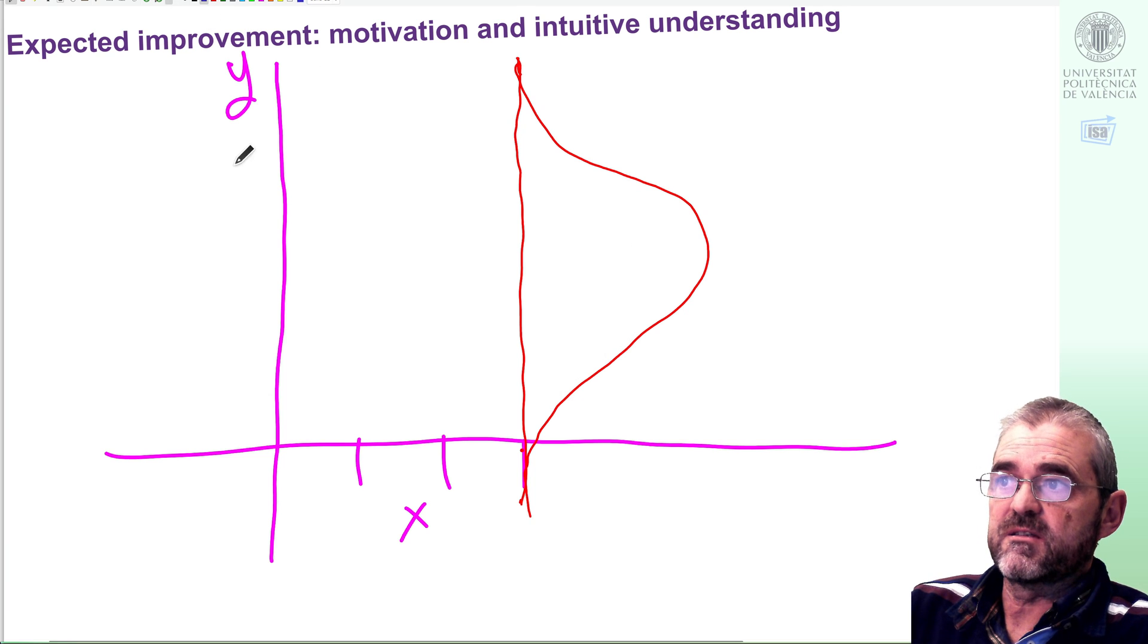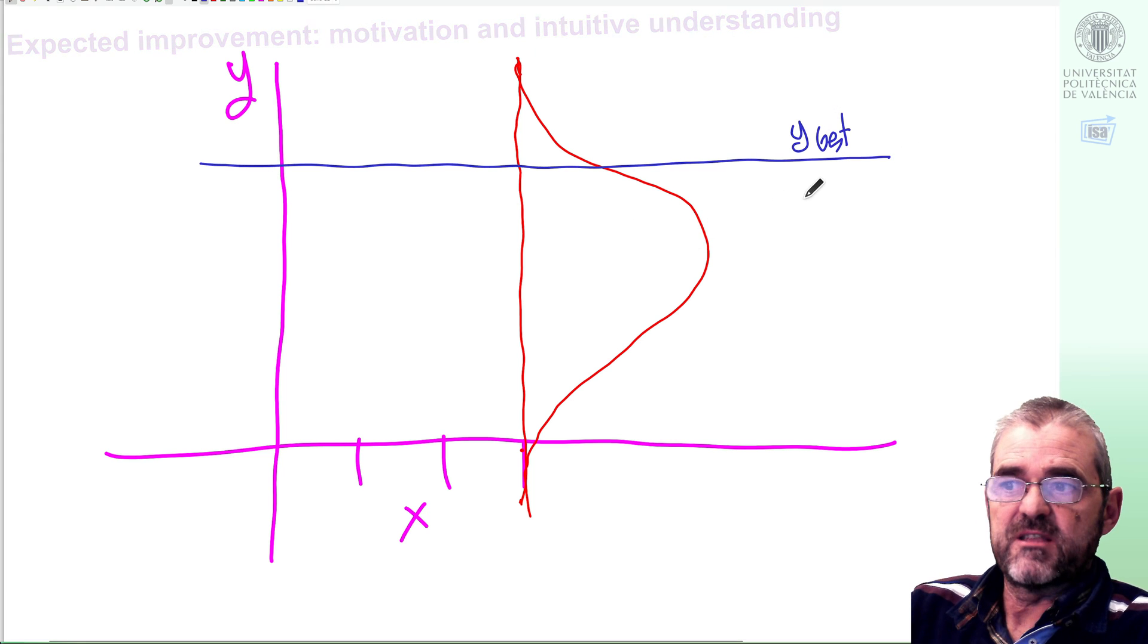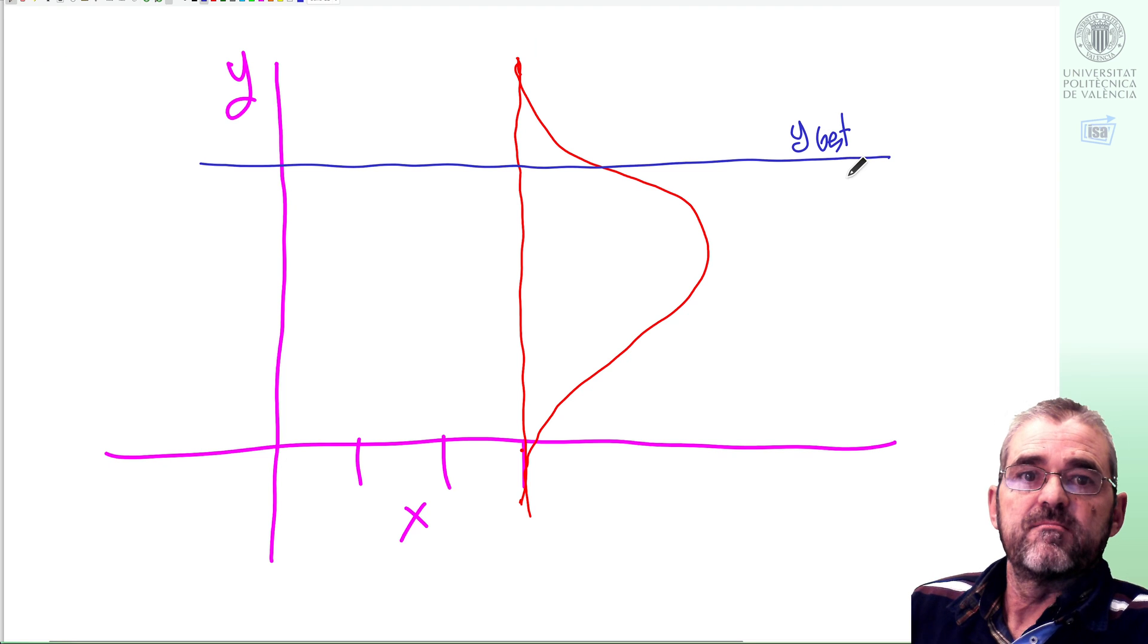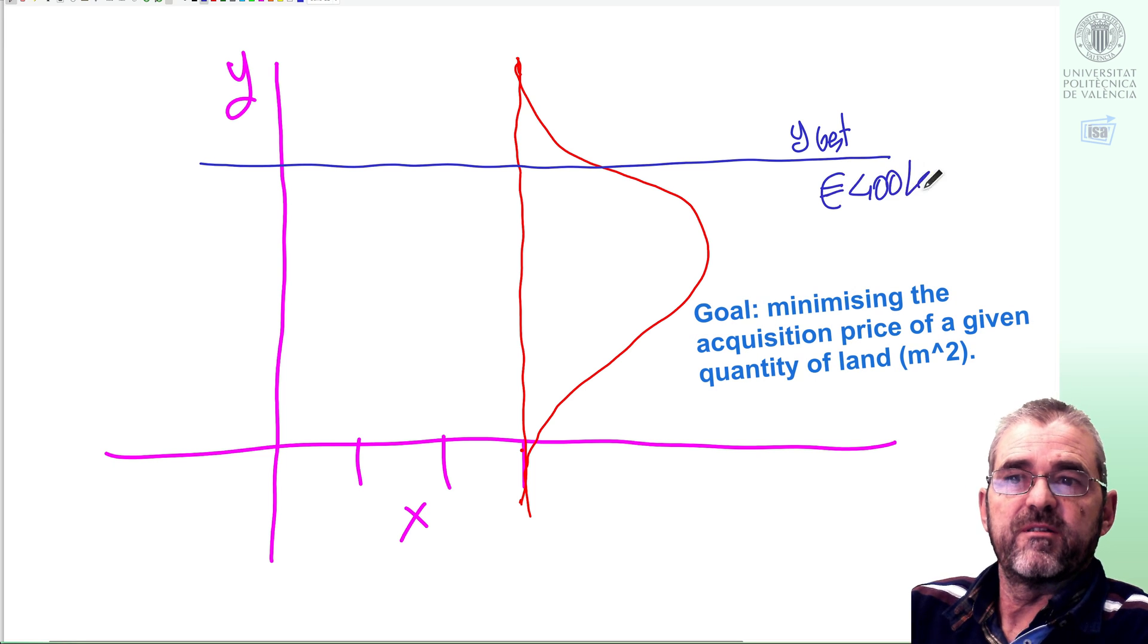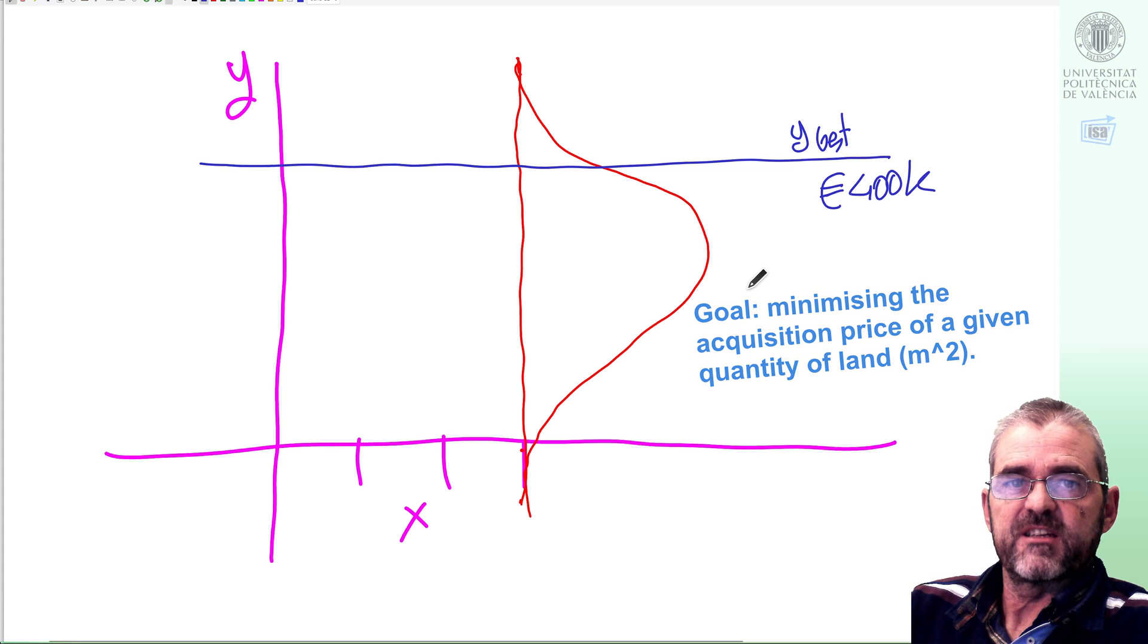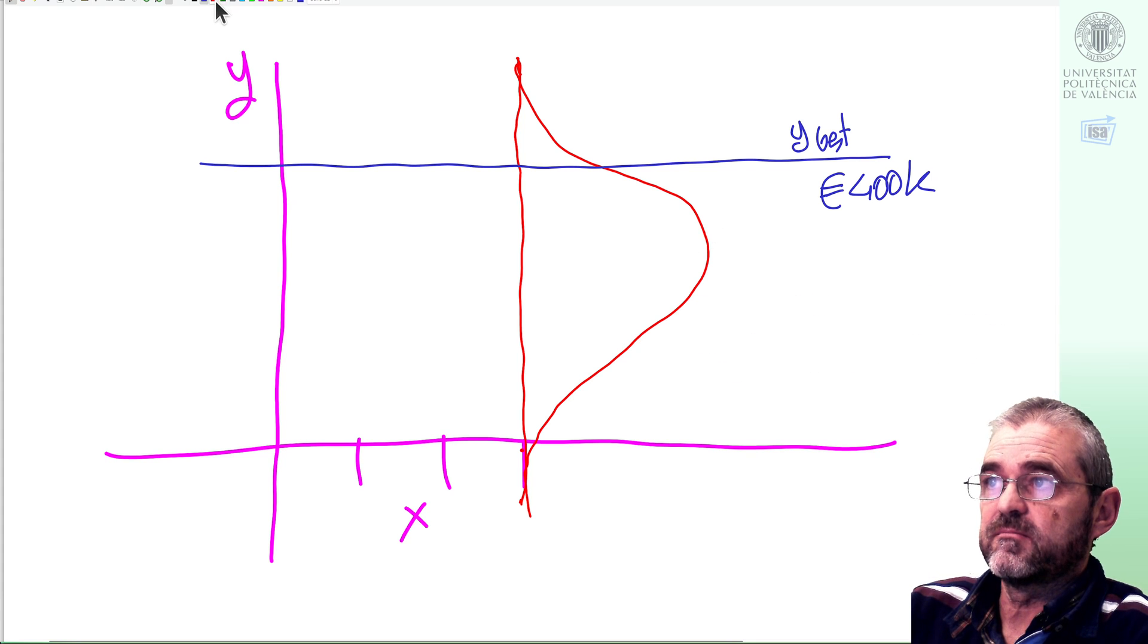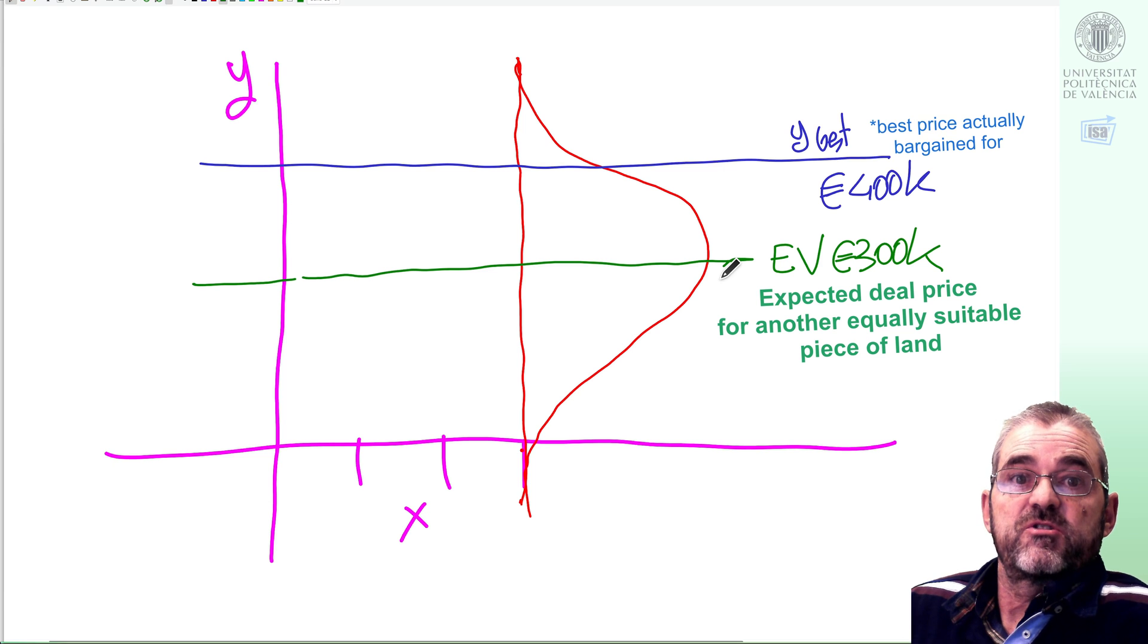So what does expected improvement mean? If we consider here our vertical axis y, then we have some possible decisions. In each possible decision, my prediction is a given Gaussian distribution. My best sample in my historical record may be this thing. So for instance, let us imagine that I want to buy a plot of land and then I got a firm offer so that I can buy that plot of land for 400,000 euros.